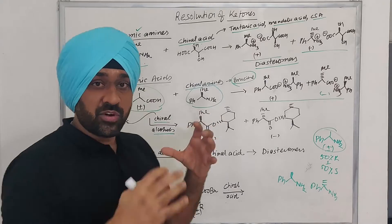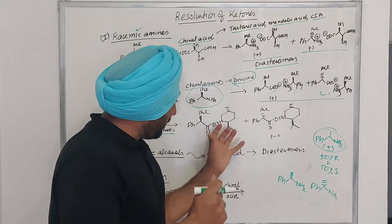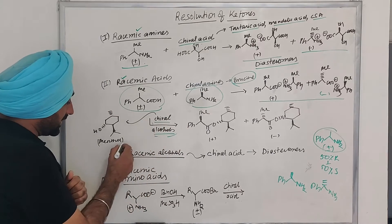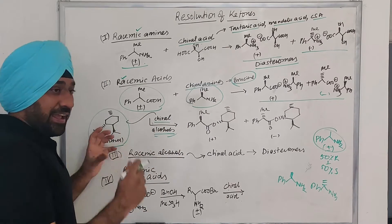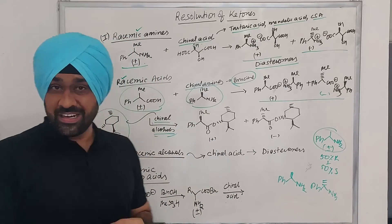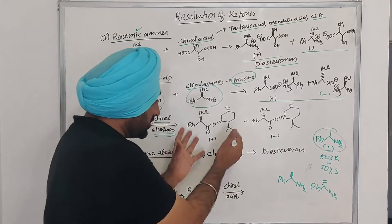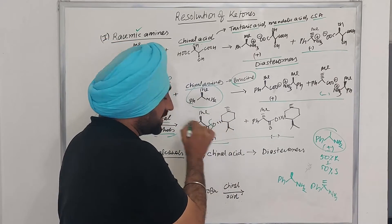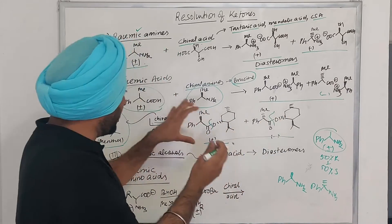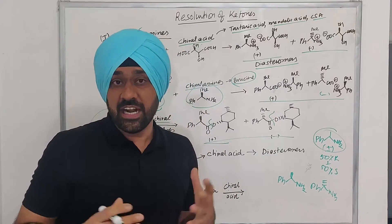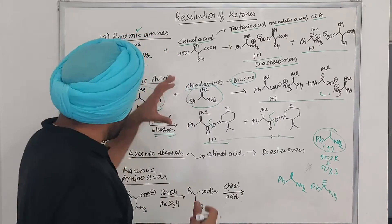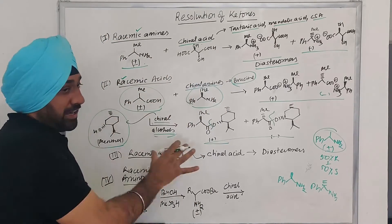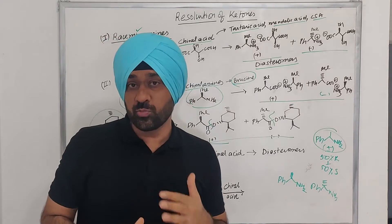When reacting with chiral alcohols, what we form is an ester — a diastereomeric pair. Here we can use chiral alcohols such as menthol. Menthol is very cheap, it is a chiral compound and easily available. So once you have a pair of diastereomers, you separate them and then you can easily hydrolyze under basic conditions to obtain the desired acid in very pure form. So we can use chiral acids and we can use chiral alcohols as well — both of these things you must know, because in the options you could be given such examples.